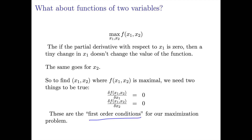In particular, notice that we've got two first-order conditions, one with respect to each of the variables that we need to choose in order to maximize the function. So the first-order conditions give us two equations in two unknowns, and we can use those to solve for the optimal value of x1 and x2.